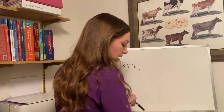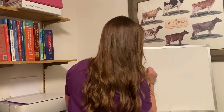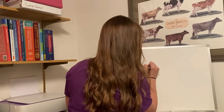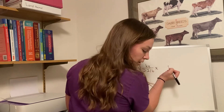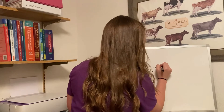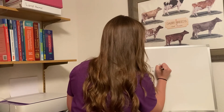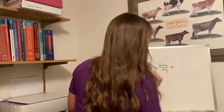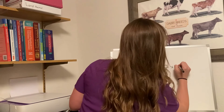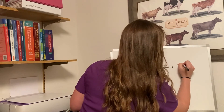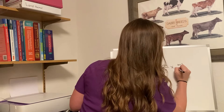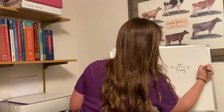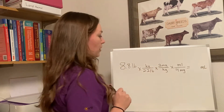So we have 8.8 pounds, and we have kilograms. For this example, our drug dosage will be 3 milligrams per kilogram, or mg/kg. And then our concentration for our example drug will be 4 mg/mL. We want to know how many milliliters of this drug we're going to give.